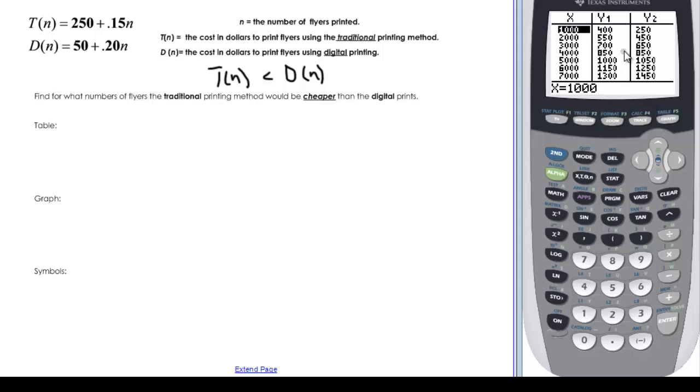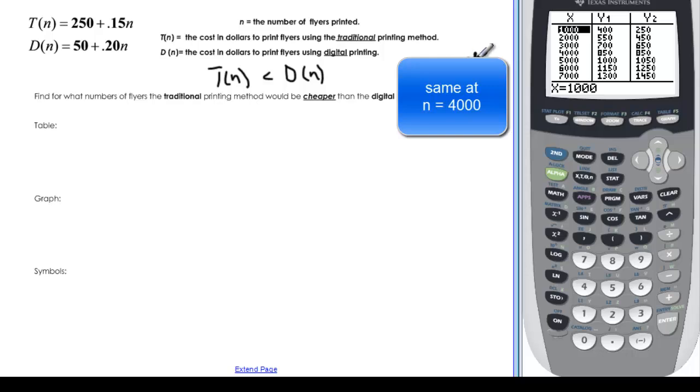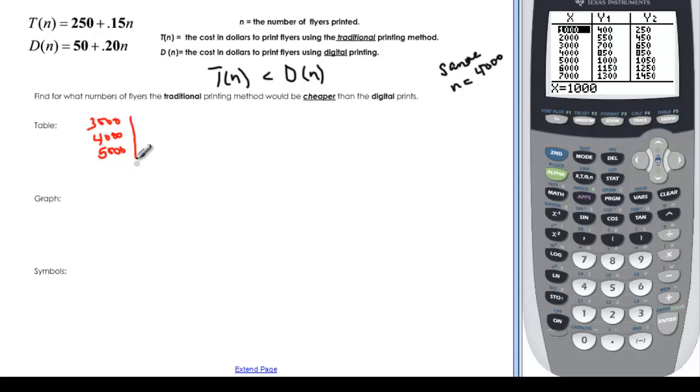And I can see that they're getting closer and closer. And oh look right there they're the same. So that tells me that they are the same for x equal or in this case n equal 4,000. So in our table the way we would look at it that way is we would say okay well then we have 3,000 and 4,000 and 5,000. Have to have a couple pieces of information in there. And then for 3,000 this is 700.